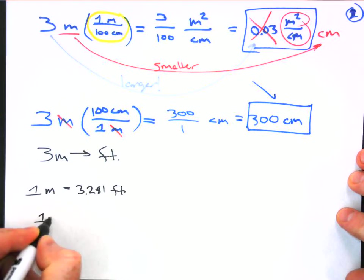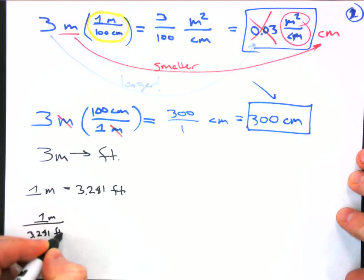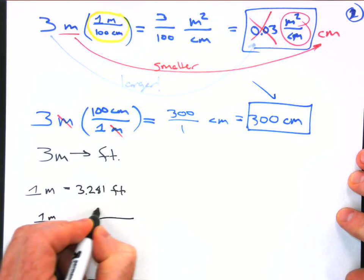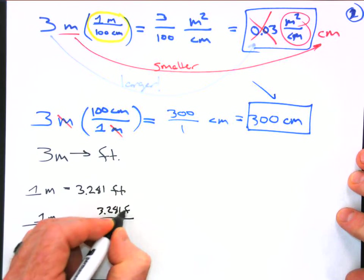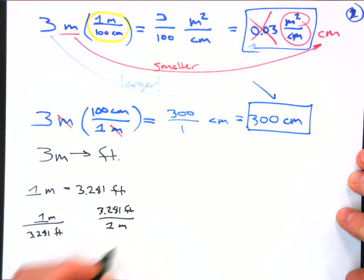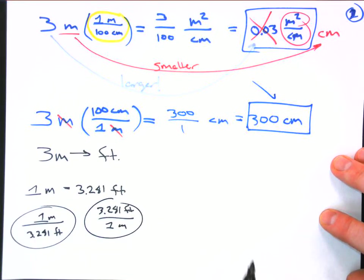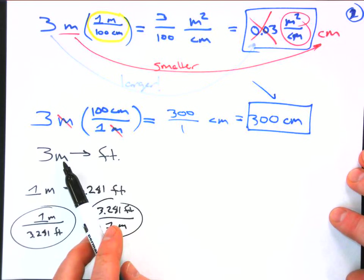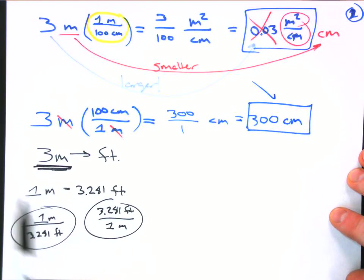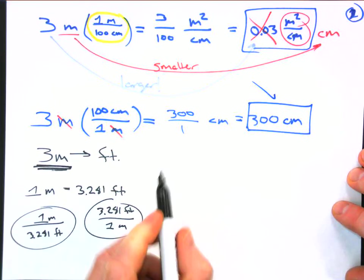We have one meter divided by 3.281 feet, or we have 3.281 feet divided by one meter. Which one do we choose? So we're trying to go from meters to feet. Shortcut, we want the meters to cancel out. When we multiply this initial measurement by one of these fractions, we have to get those meters to cancel out. This is the only one that's going to do it.